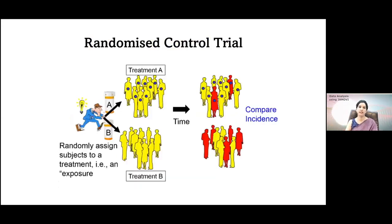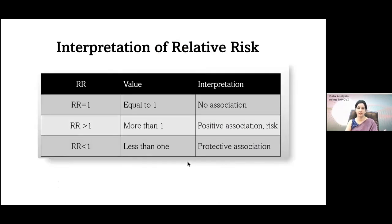In a randomized controlled trial, you randomly assign treatment A and treatment B to two groups and then compare the incidence. Regarding interpretation of relative risk: if the value equals one, we call it no association; if it is more than one, we call it a positive association or risk; and if it is less than one, we call it a protective association.